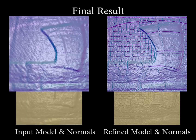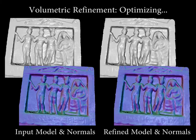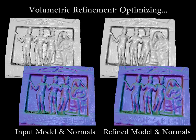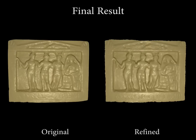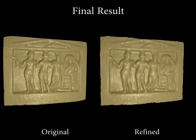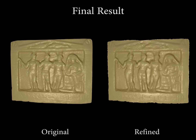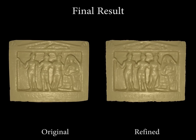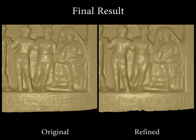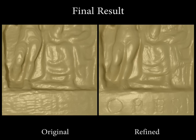Here we can see the fine scale detail which our method retrieves. This is a result on a relief sequence showing the hierarchical optimization of the truncated signed-distance field. Note that we retrieved the geometry of the carved letters.